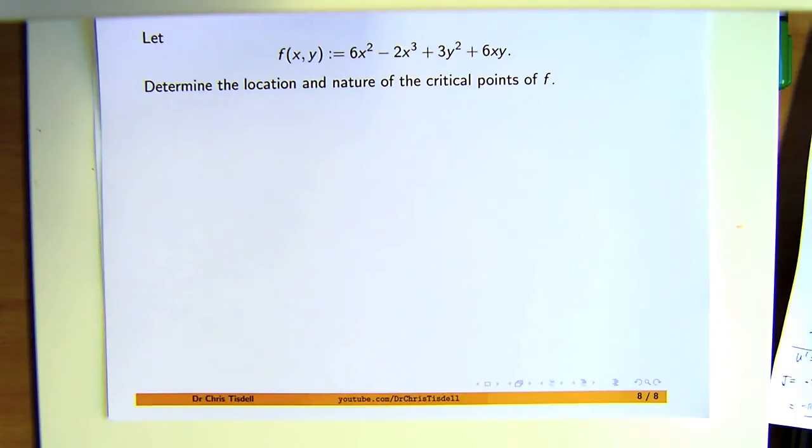When we talk about critical points, critical points is just a point where the first partial derivatives of our f are equal to 0. That means that the surface will have a horizontal tangent plane at that point or those points. To determine the nature of the critical points, we use a test called the second derivative test. So let's work through it, it's a step-by-step process.